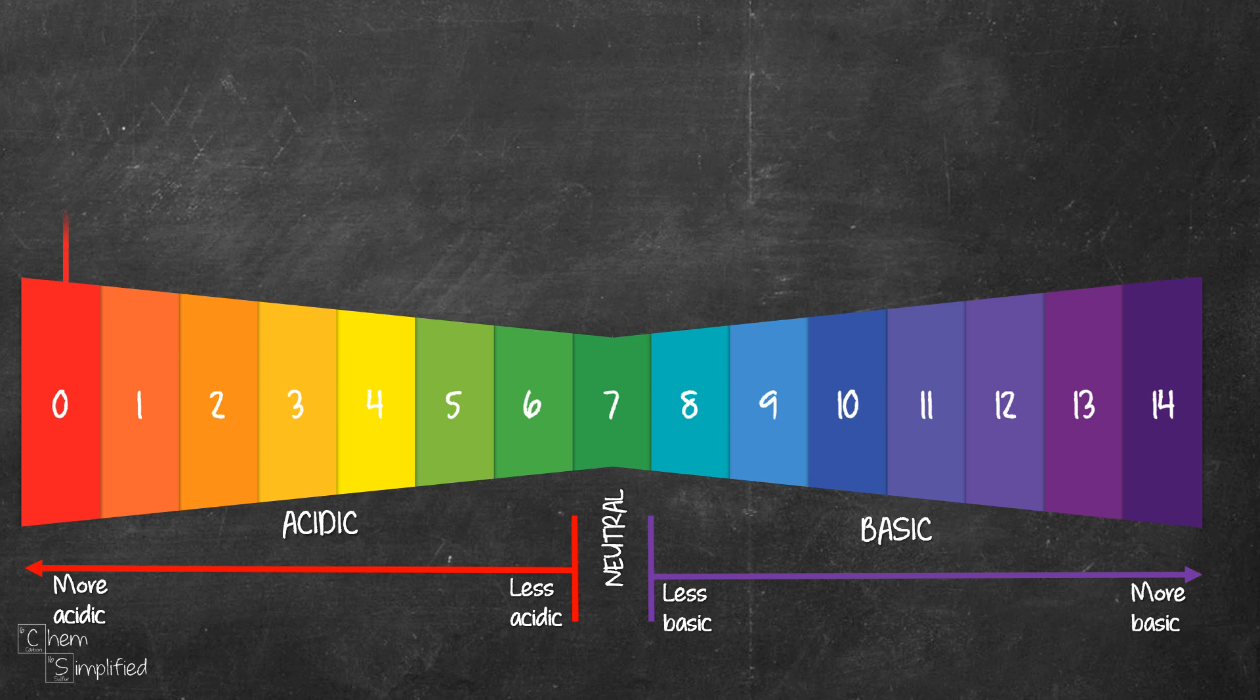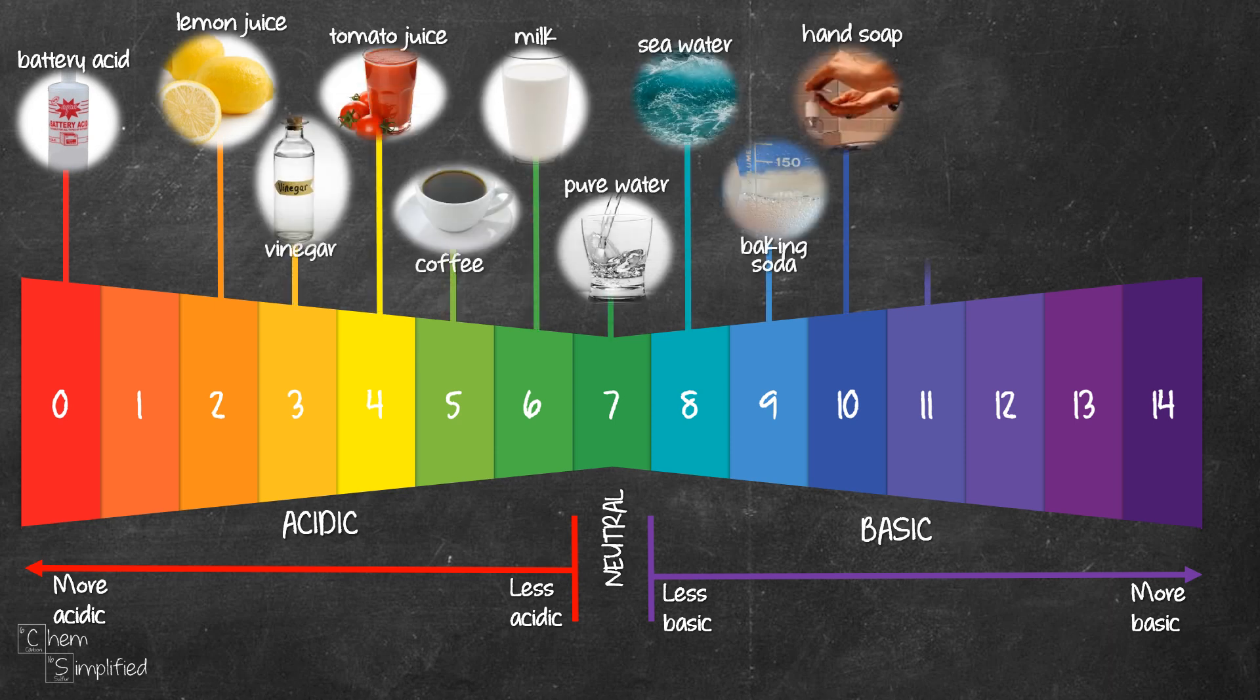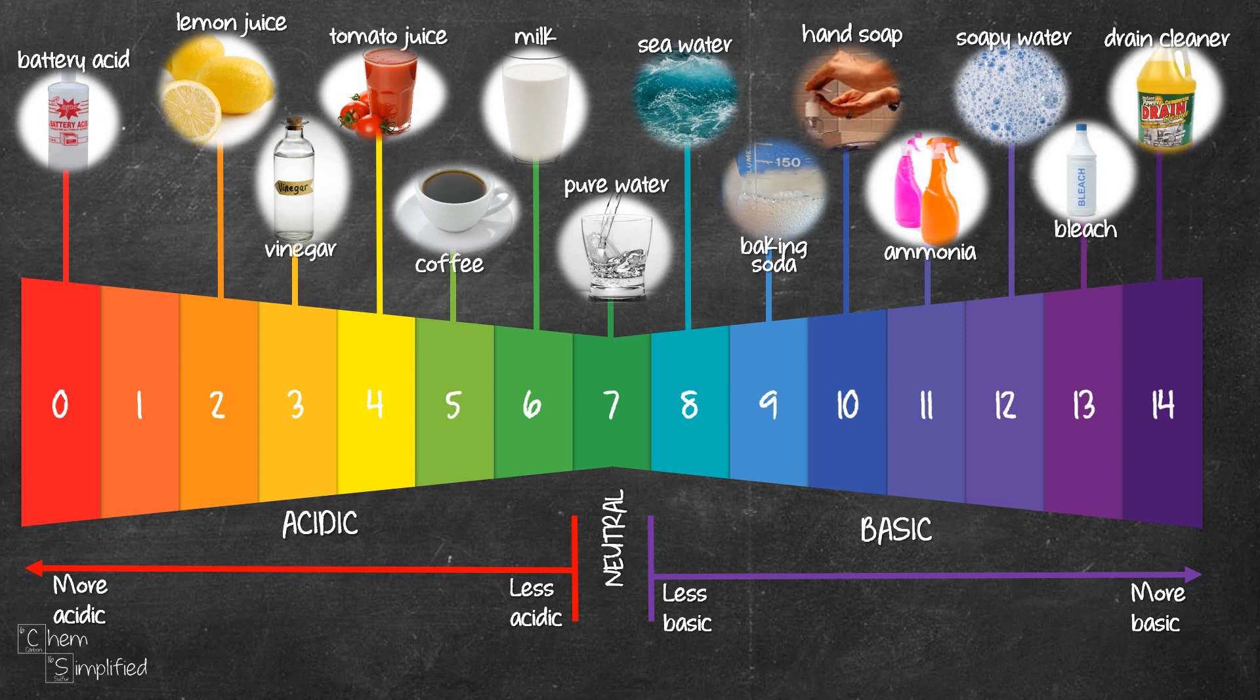The pH of items we encounter in our everyday lives is normally between 0 to 14. So, how do we measure if a solution is acidic or basic?